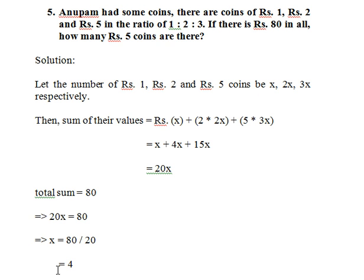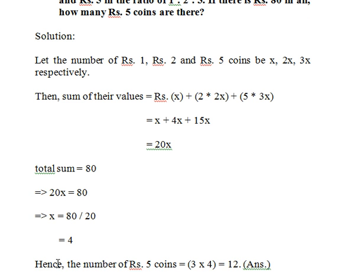That means now we can find out the number of 5 rupee coins. So we readily know that there are 3x number of 5 rupees coins, so 3 into 4.